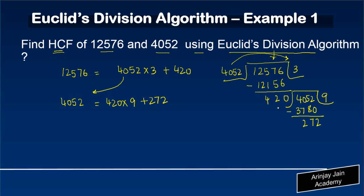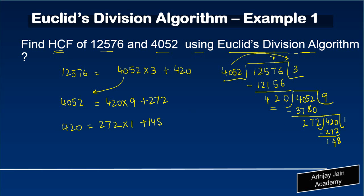Now I divide 420 by 272. It goes one time. 420 minus 272 gives a remainder of 148. So we write: 420 = 272 × 1 + 148.